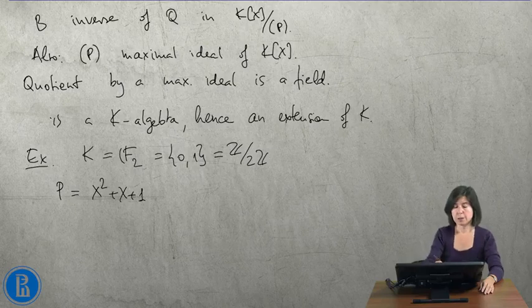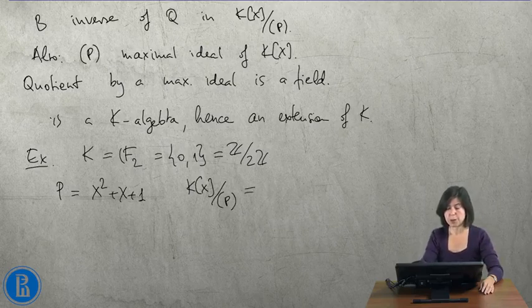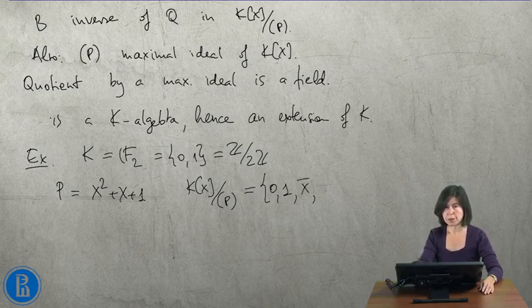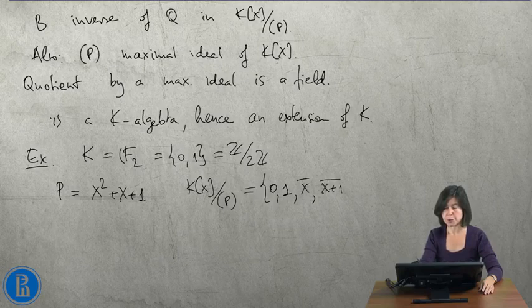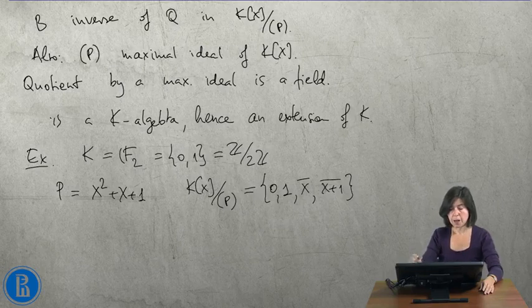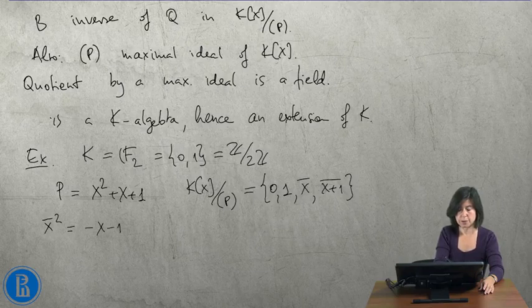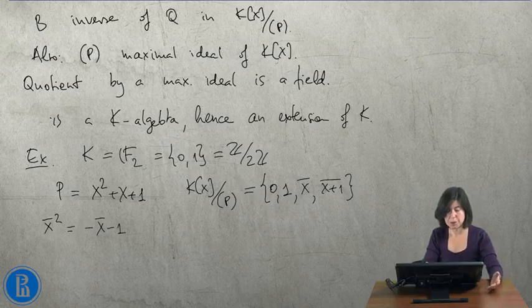Then K[x] modulo P is a field of four elements. It contains 0, 1, the class of x modulo P—let me denote it by x-bar—and the class of x plus 1 modulo P, let me denote it by x plus 1 bar. And you see that x-bar squared is equal to minus x minus 1, since you know that x squared plus x plus 1 is 0 in our field.